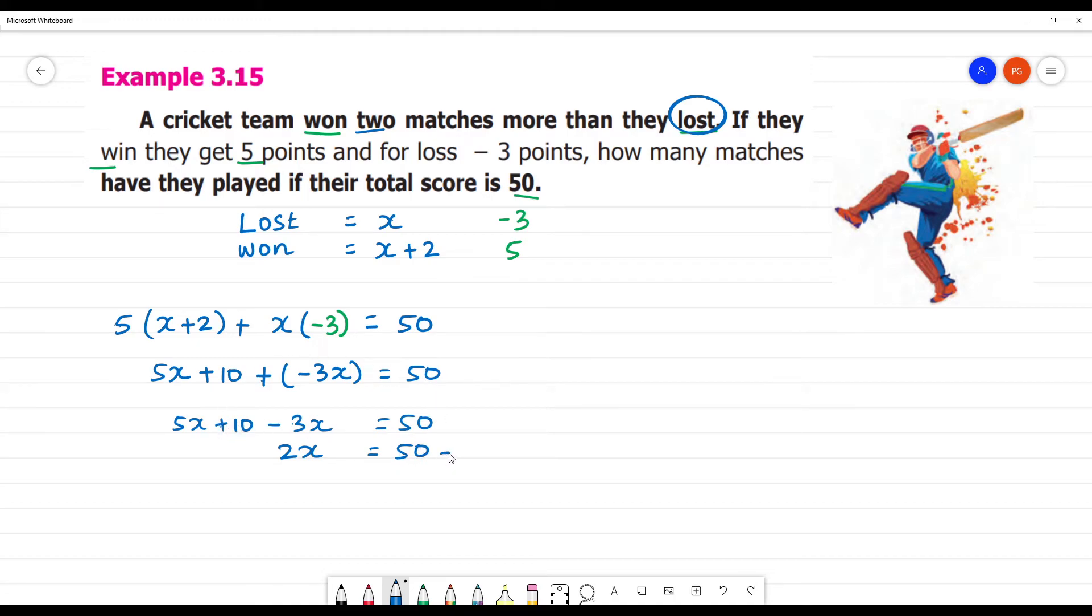Plus 10, this is minus 10. 2x is equal to 40. x is equal to 40 divided by 2. x is equal to 20.